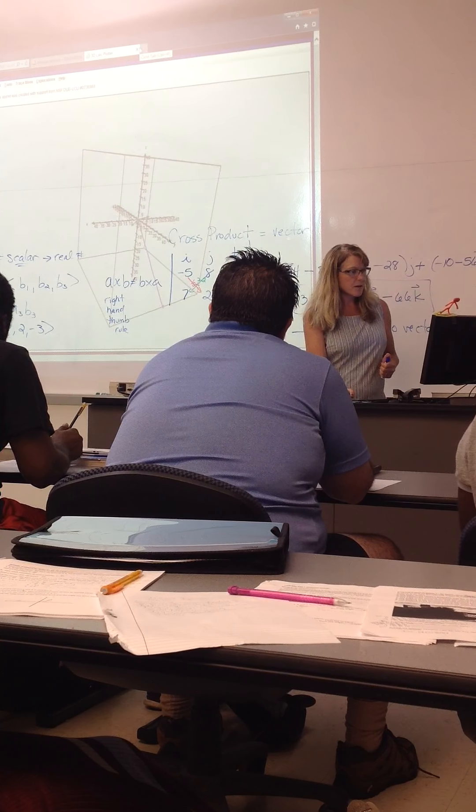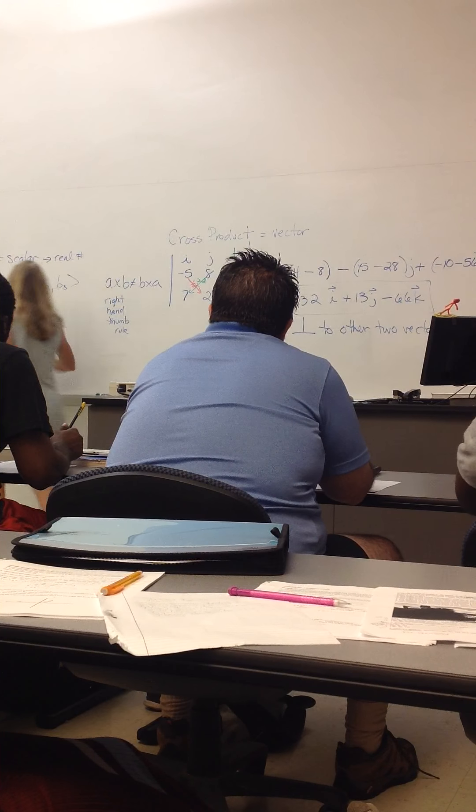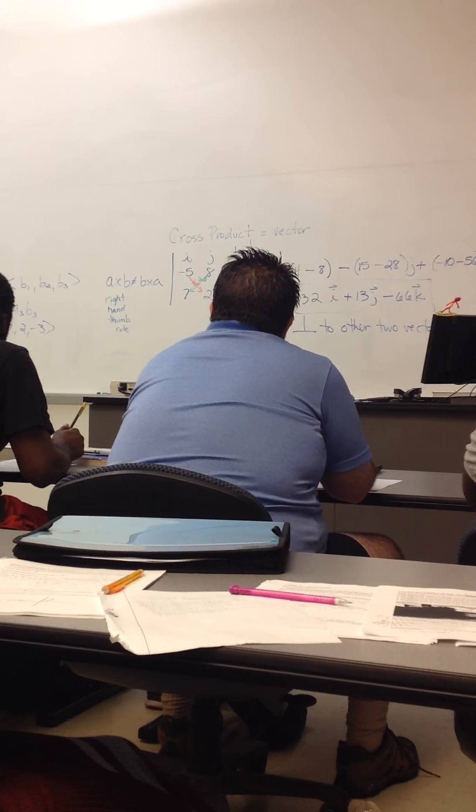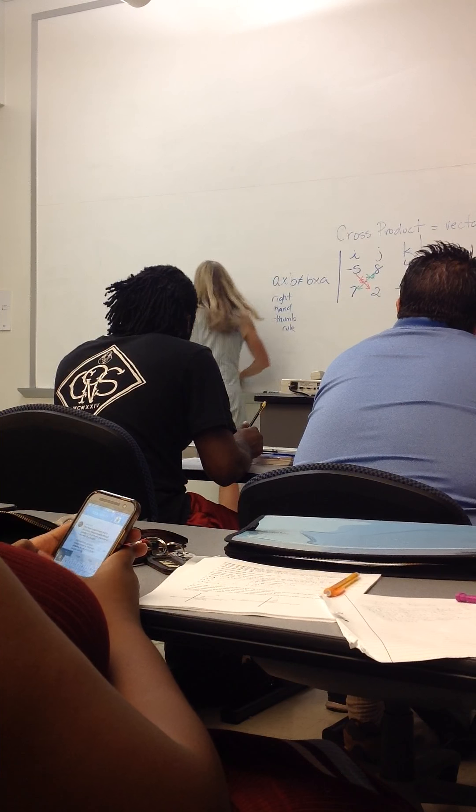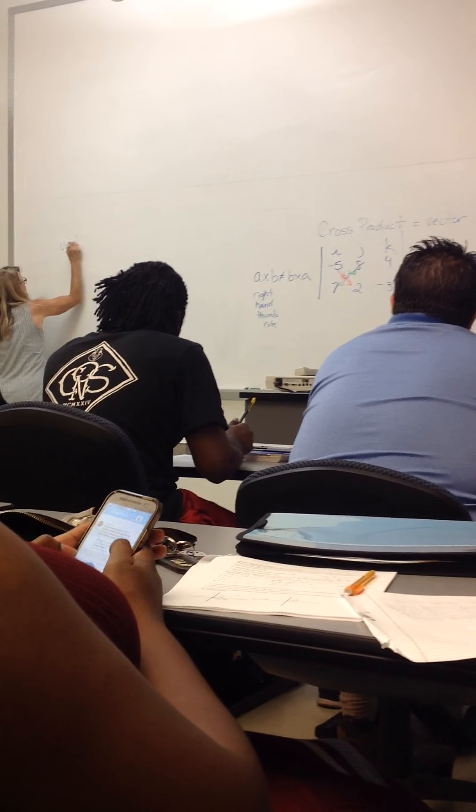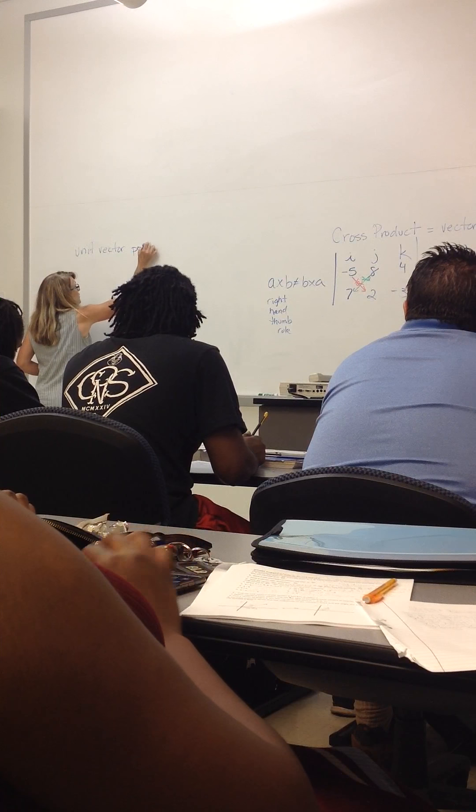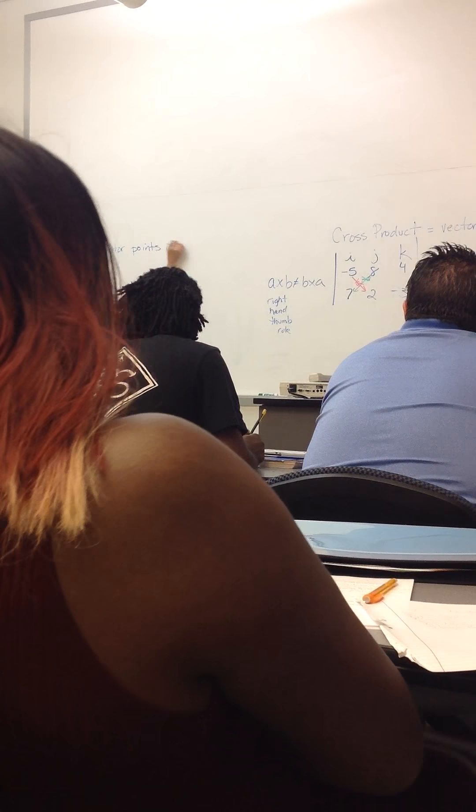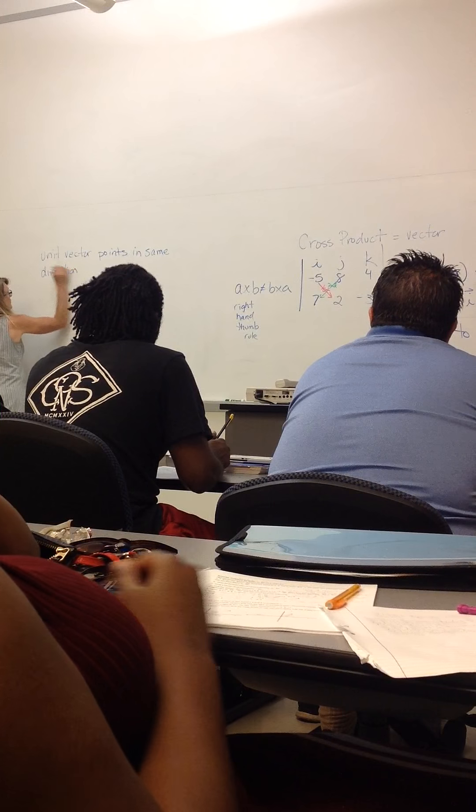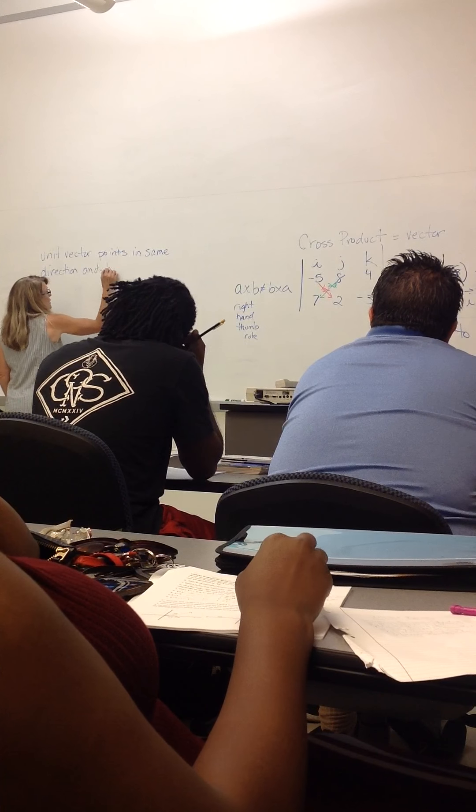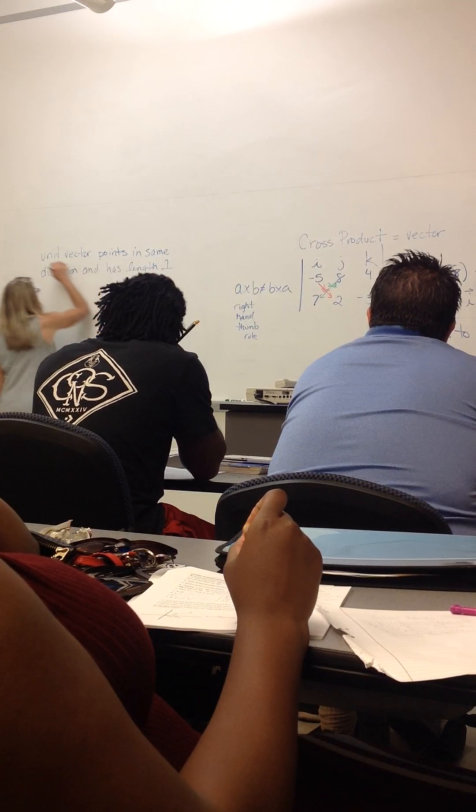Definition, unit vectors. A unit vector points in the same direction as the original vector and has length 1. That's what a unit vector is.